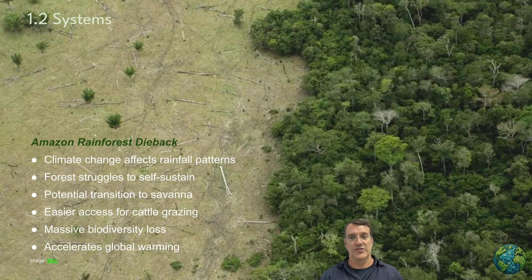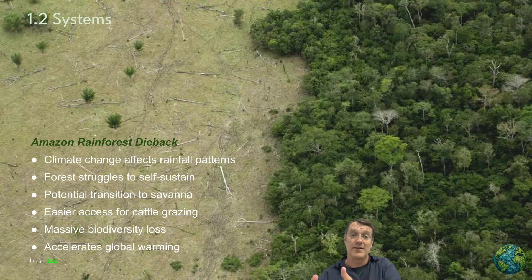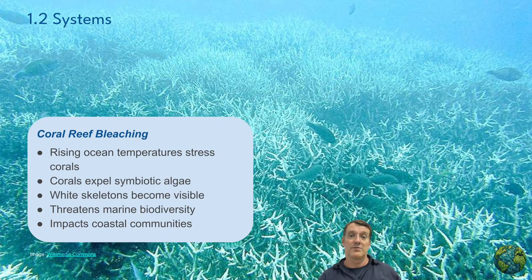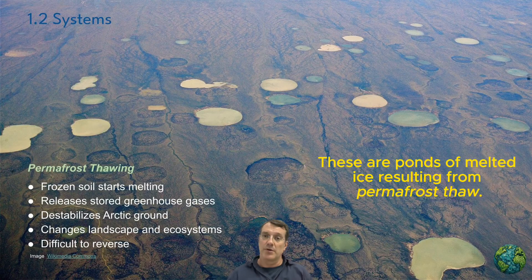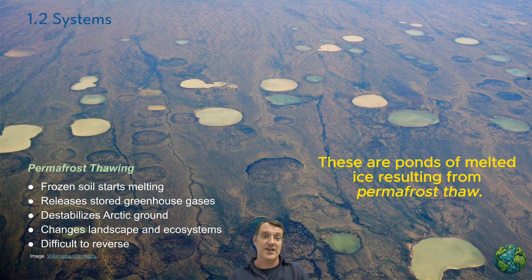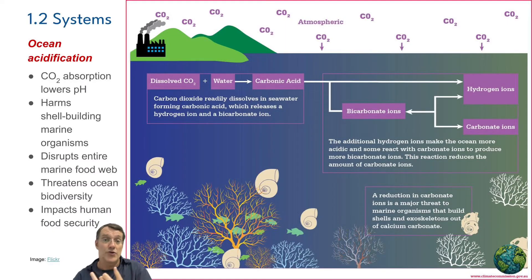Several potential tipping points exist in Earth's system. The Amazon rainforest dieback is one example where climate change-induced drought can transform vast areas into savannah, exacerbated by human activities related to cattle ranching. Coral reef bleaching is another example where rising ocean temperatures cause corals to expel symbiotic algae, potentially leading to widespread reef death and the collapse of food webs. Permafrost thawing in Arctic regions is a third example where melting ice releases greenhouse gases, further accelerating global warming. Ocean acidification and invasive species dominance are other instances where systems may approach critical tipping points.